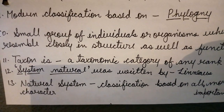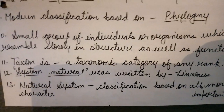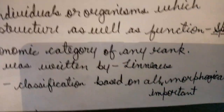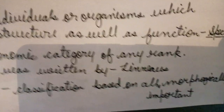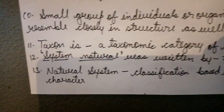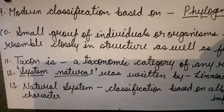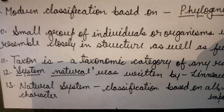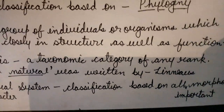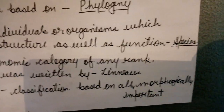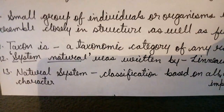Systema Naturae was given by Linnaeus. The natural system of classification is based on all morphologically important characters.